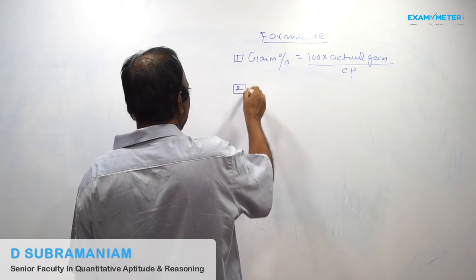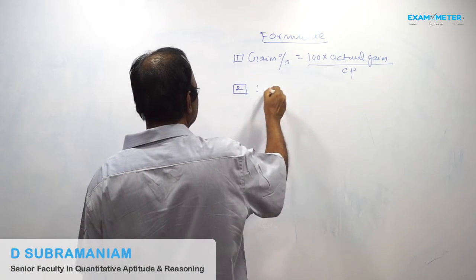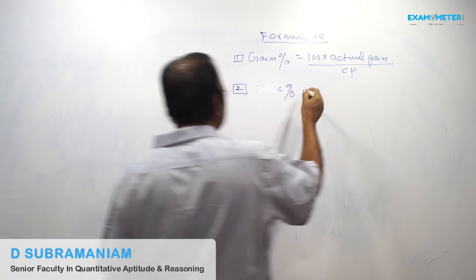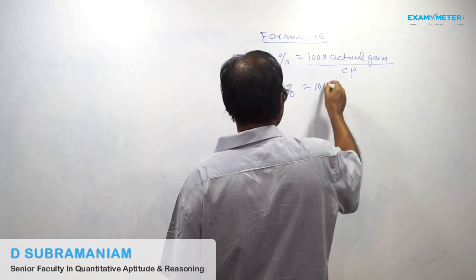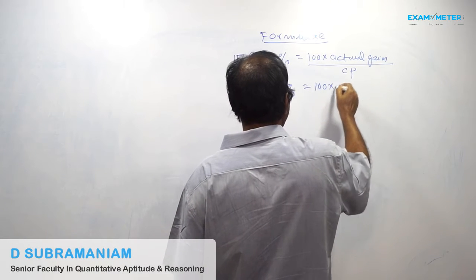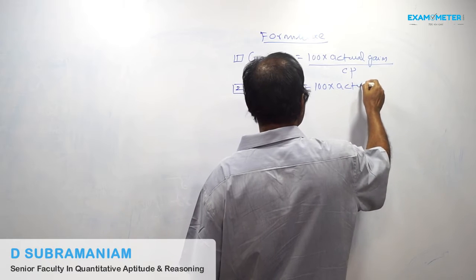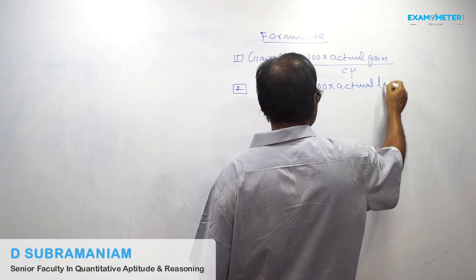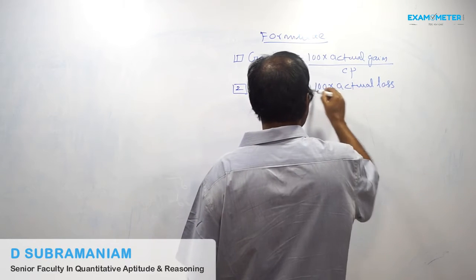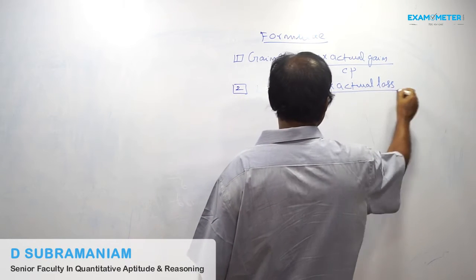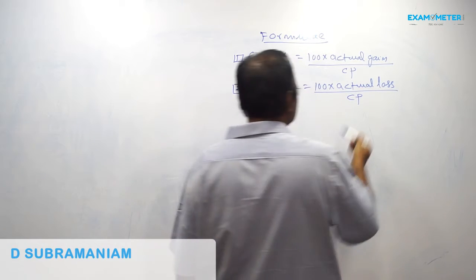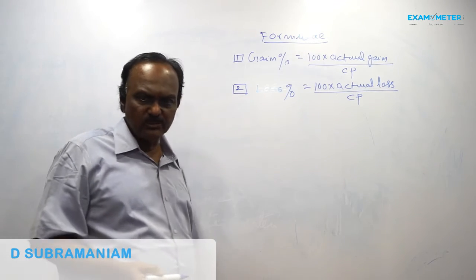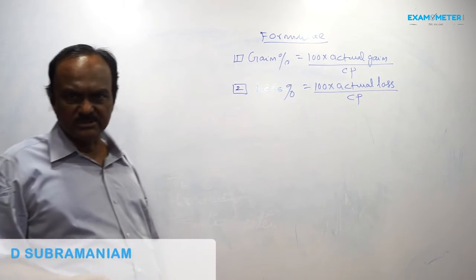Second Formula: Loss Percent is equal to 100 multiplied by actual loss, divided by Cost Price. That is, Loss% = (100 × actual loss) / CP.